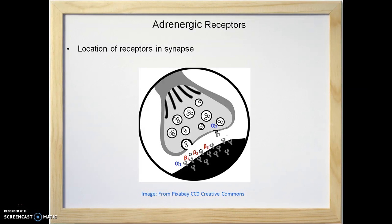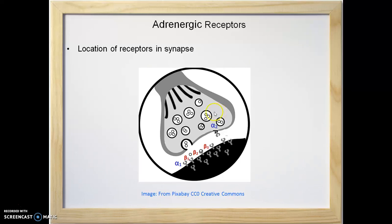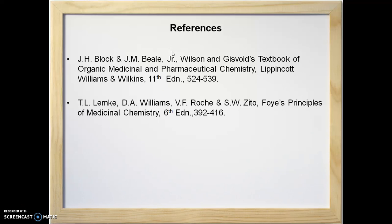Where are these adrenoreceptors located in the synapse? Alpha 1, beta 1, beta 2, and beta 3 are mainly located postsynaptically, while alpha 2 receptors are located presynaptically. These are the references. Thank you.